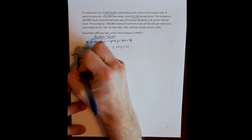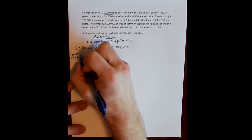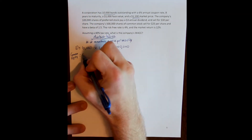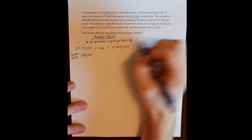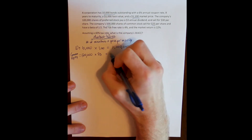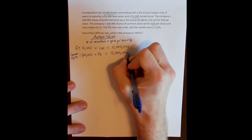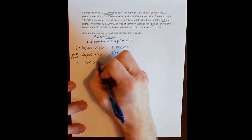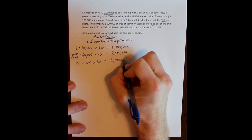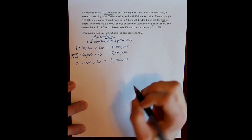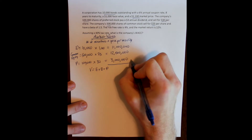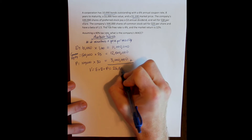Then we have common equity, which we denote as E. For equity, we have the number of shares times the price per share. The company has 500,000 common shares and they sell for $25 a share, giving us a market value of common equity of $12.5 million. Finally, we have preferred shares. The firm has 100,000 shares of preferred stock trading for $30 per share, for a total market value of preferred equity of $3 million. The total market value of the firm is the sum of all three, giving us $26.5 million.